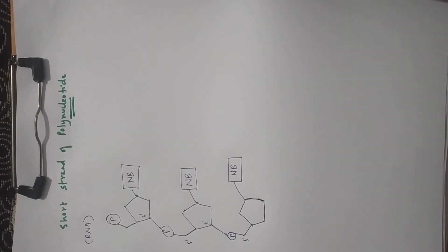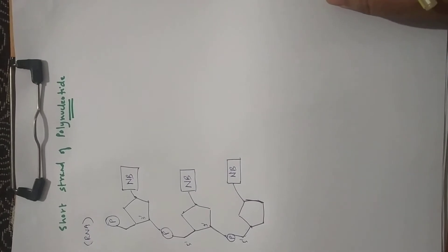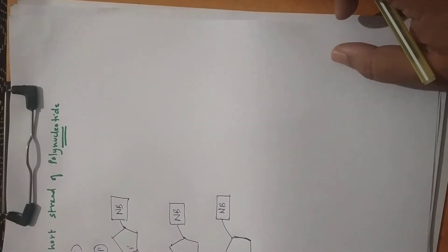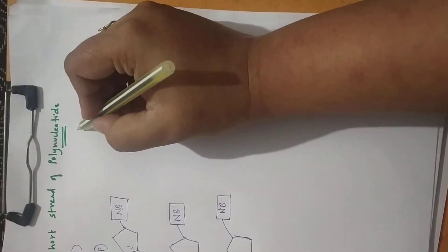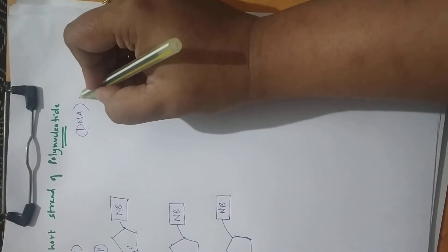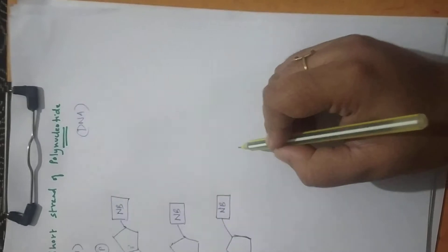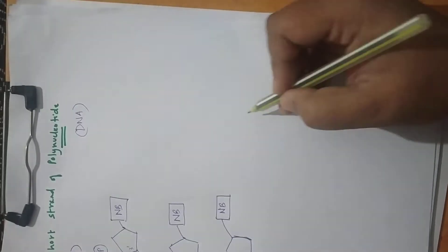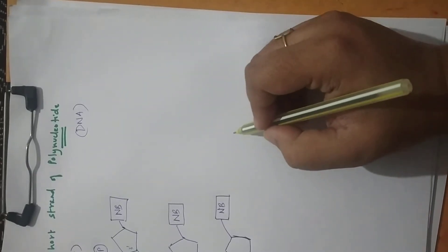Now if I want to draw a short strand of DNA, how will I show that? We have to remember that DNA has 2 strands, and they are anti-parallel strands. So one will run in this direction and the other will run in the opposite. So this is how we will draw.